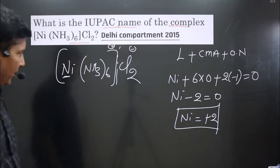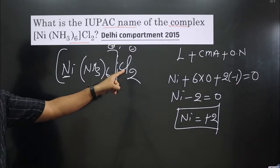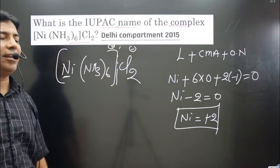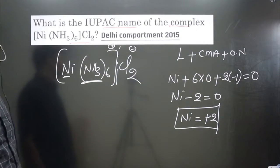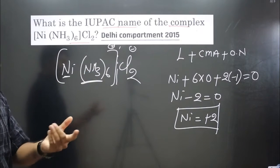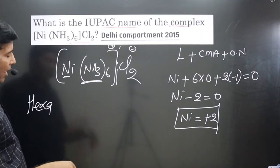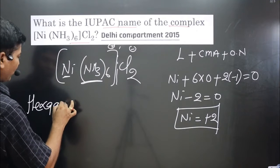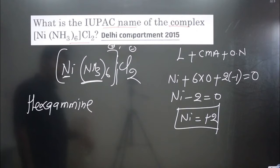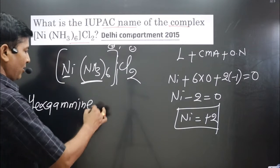Start naming by writing the cationic complex first, followed by the counter ion. The counter ion undergoes dissociation and is not part of the complex itself. There is only one type of ligand here but six of them, so we use the prefix 'hexa.' The ligand name for ammonia is 'amine' — keep in mind it must be spelled with double 'm': 'ammine.' Writing only a single 'm' would be incorrect.